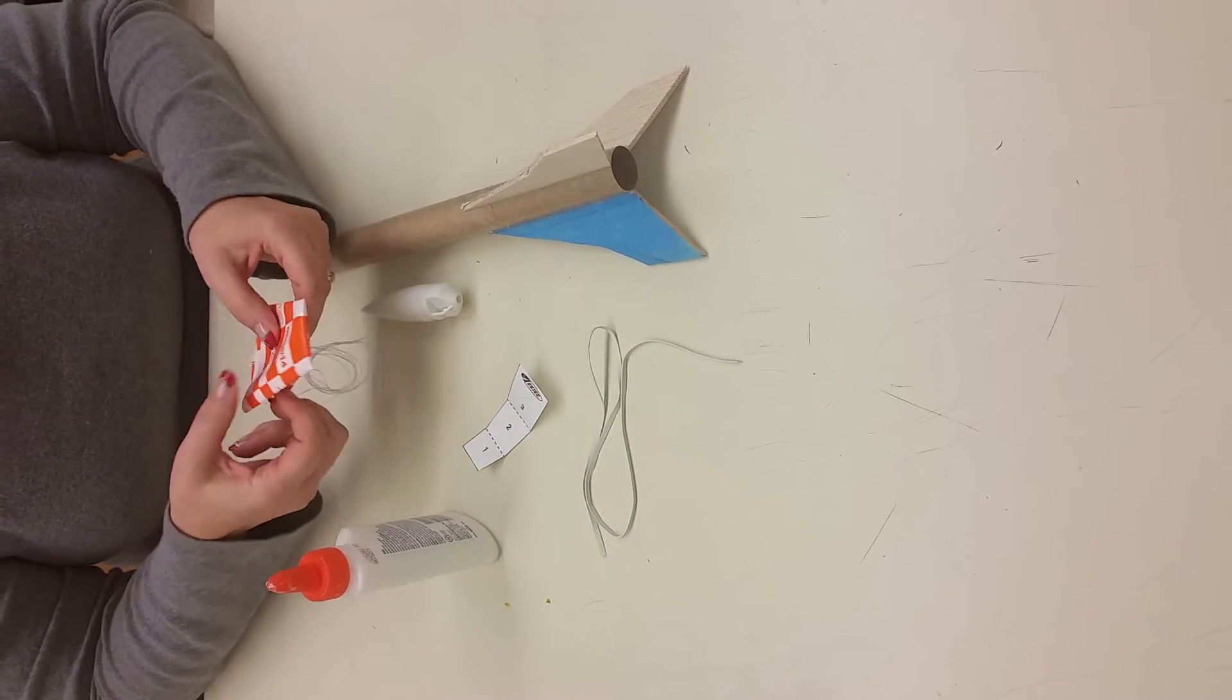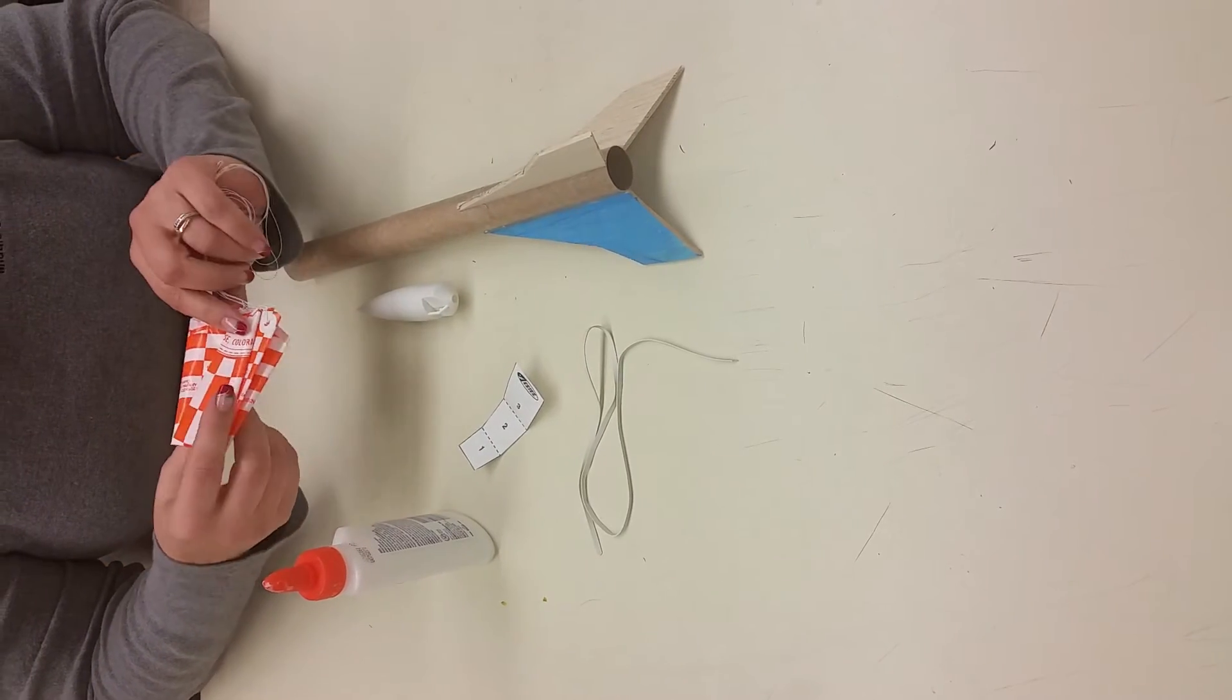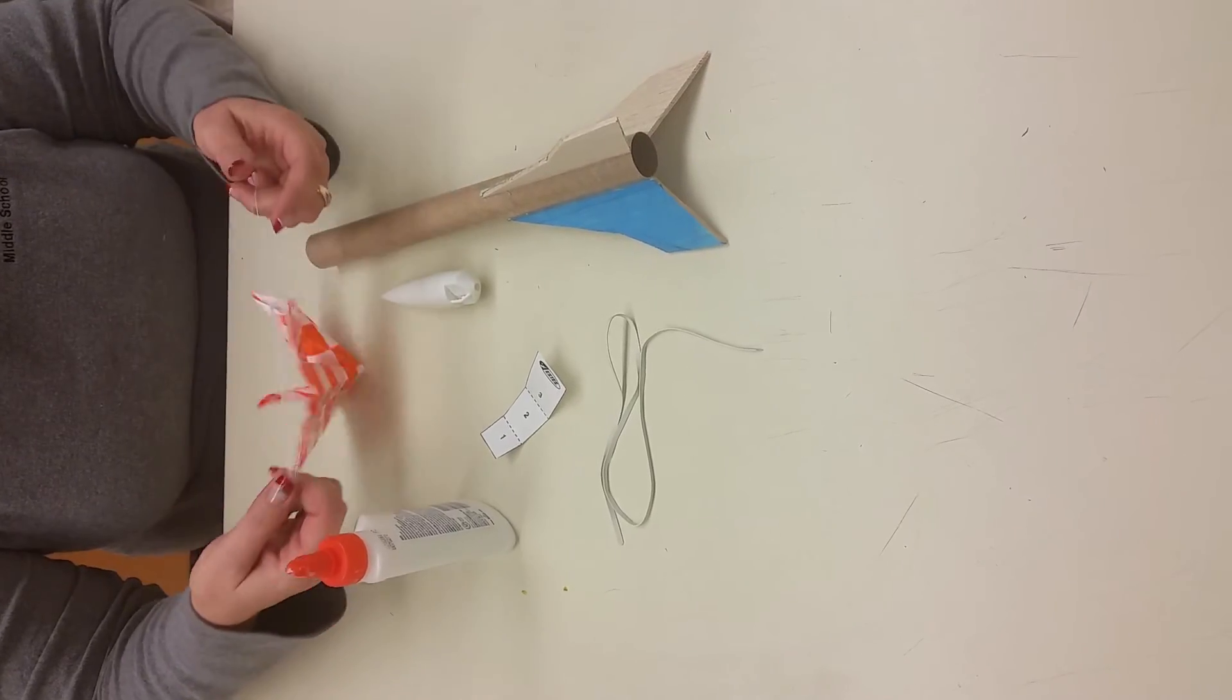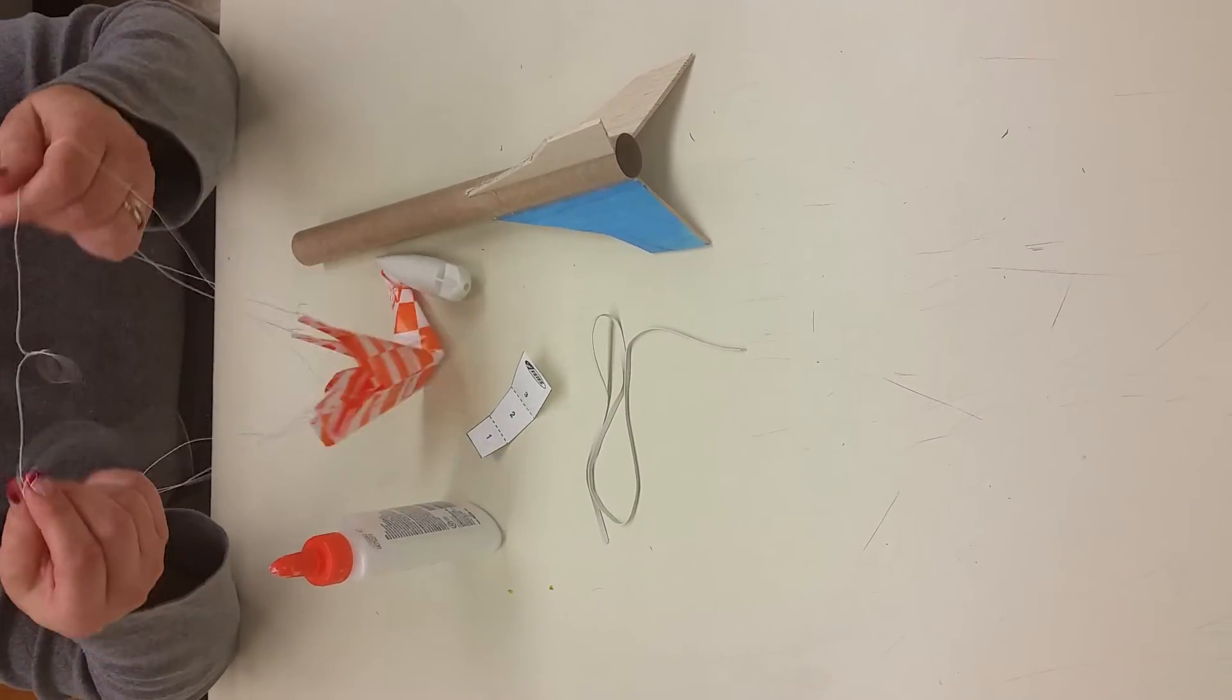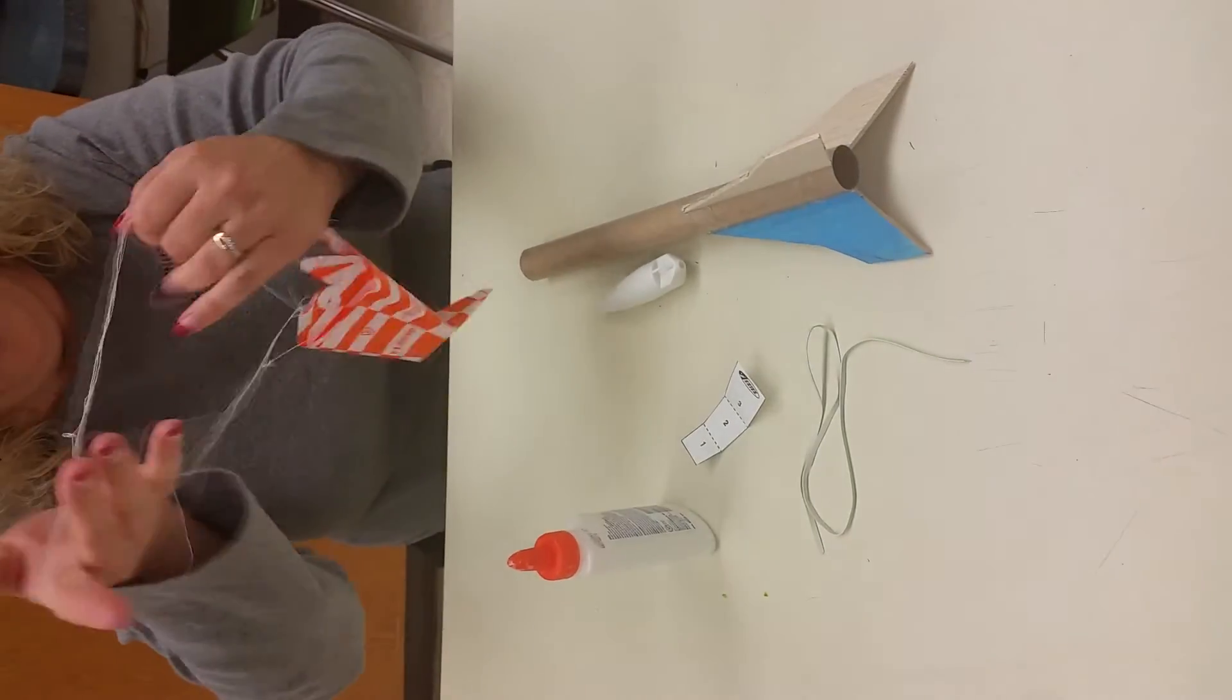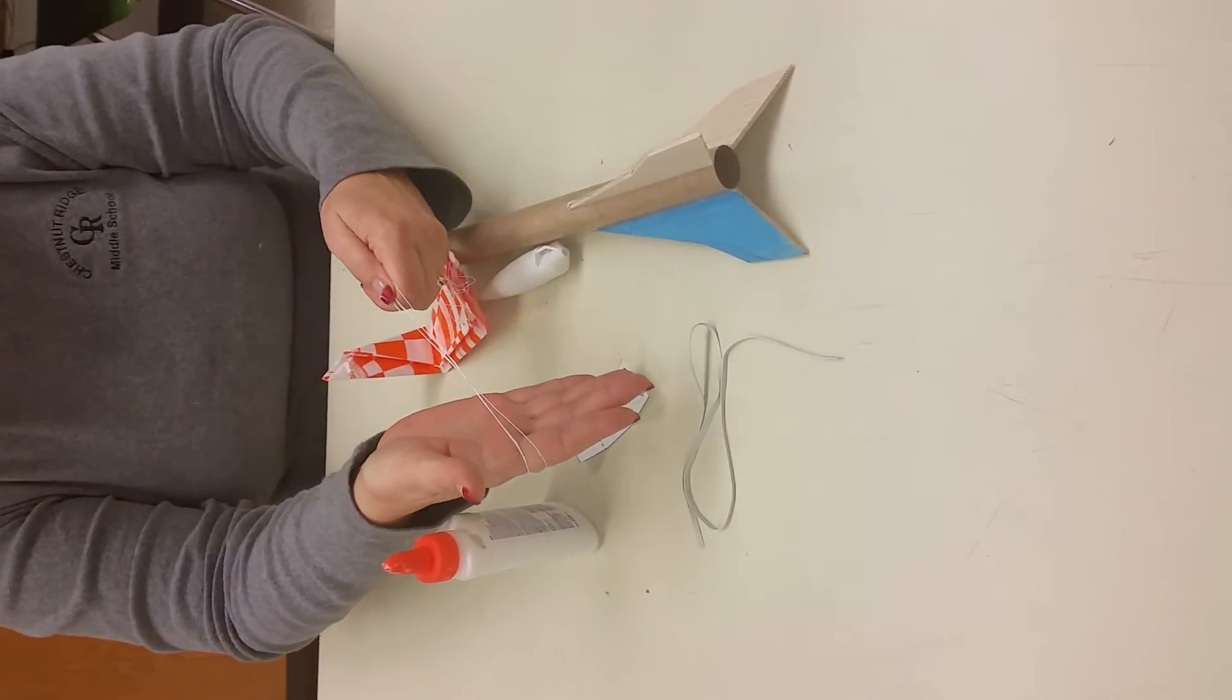First thing we're going to do is take our parachute. You don't want to unwrap your parachute if you don't have to. You just want to gather your strings. There should be three loops here, so you're going to undo them so that you can find all three loops and gather them together like this.